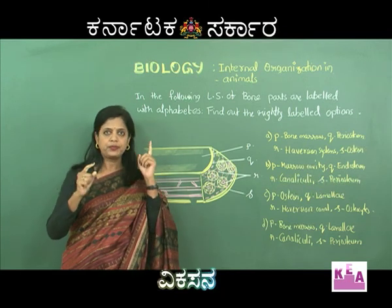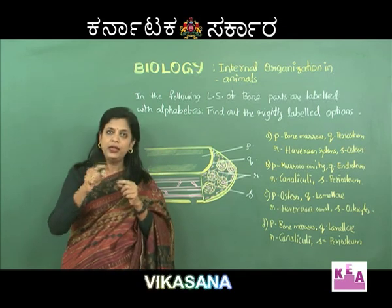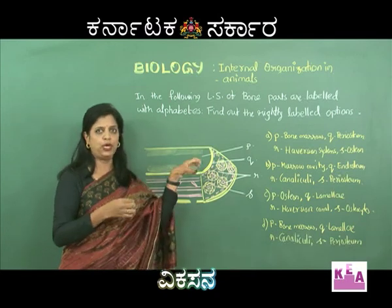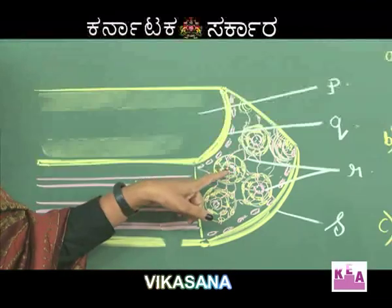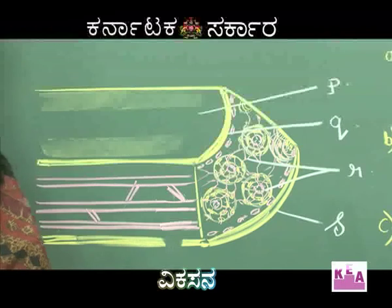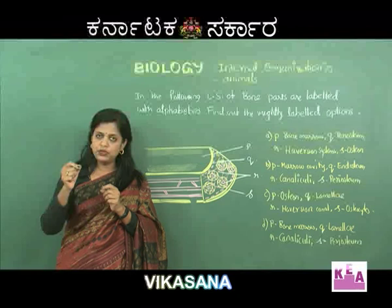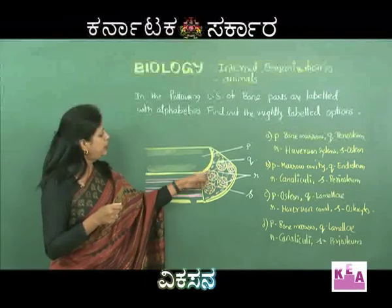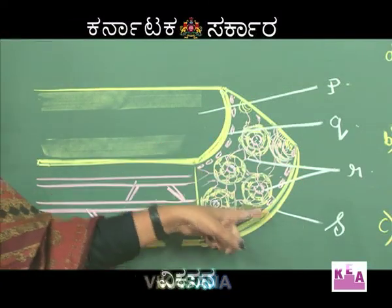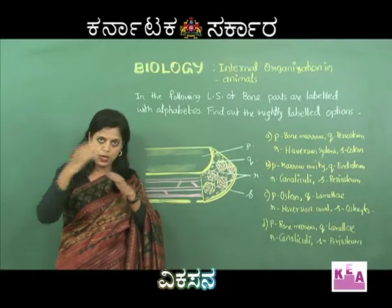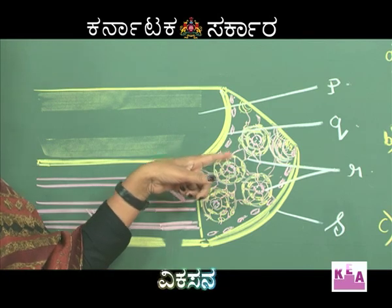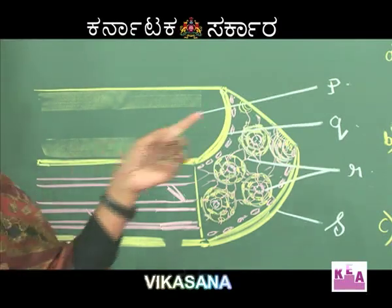Osteocytes and bone lamellae are connected by protoplasmic connections called canaliculi. Canaliculi connect lamellae to lamellae and haversian system to haversian system. The bone has two coverings: the inner covering is called endosteum, and the outermost covering is called periosteum. Osteoblasts are cells that form and enter down into the lacunae.